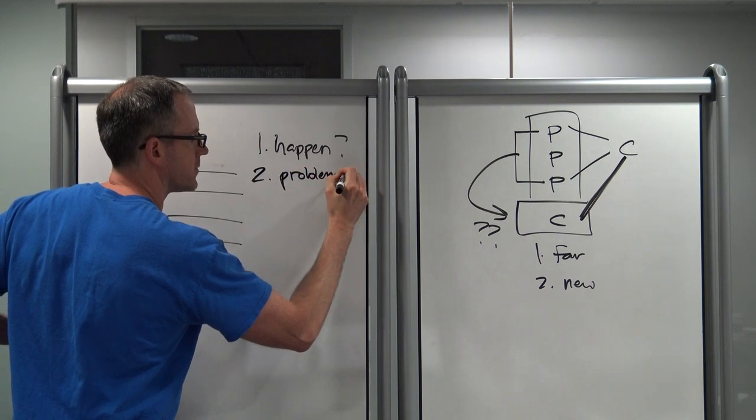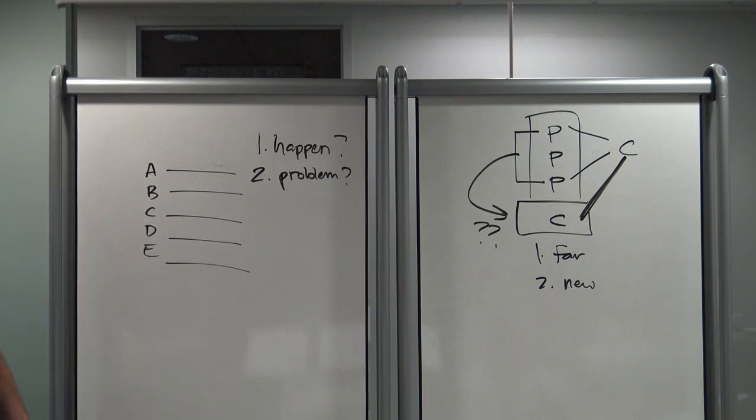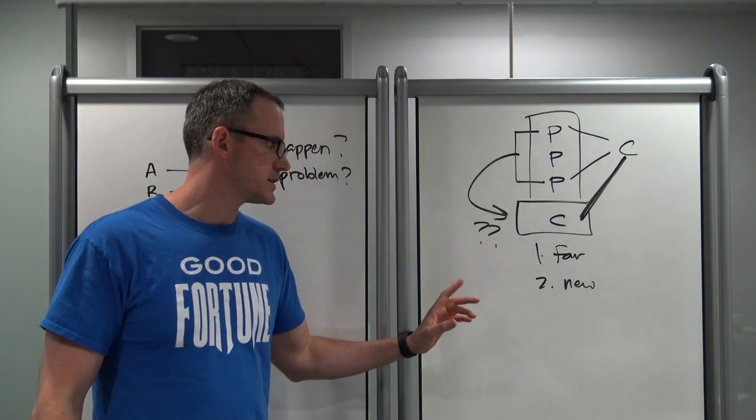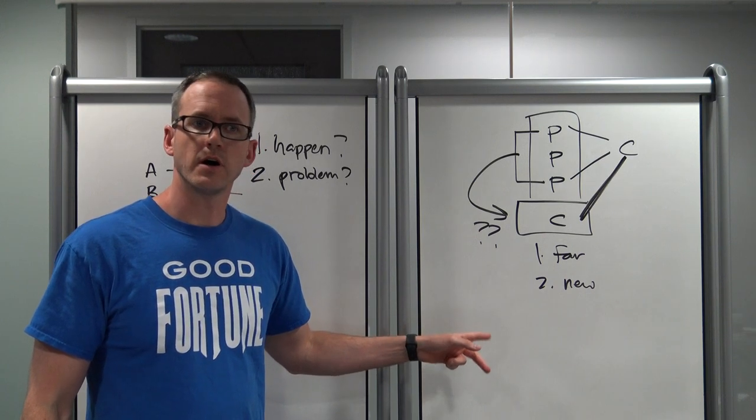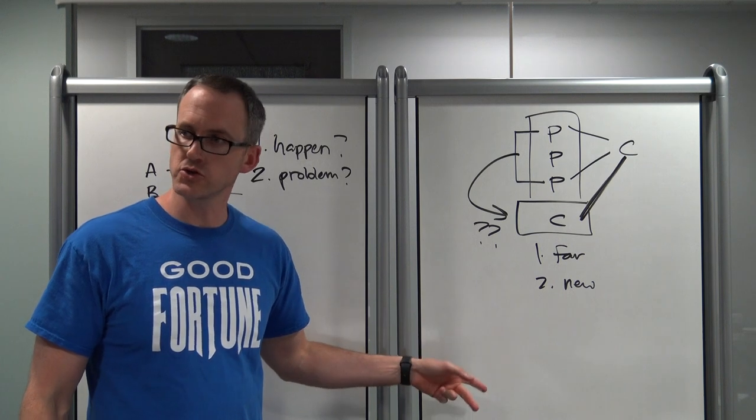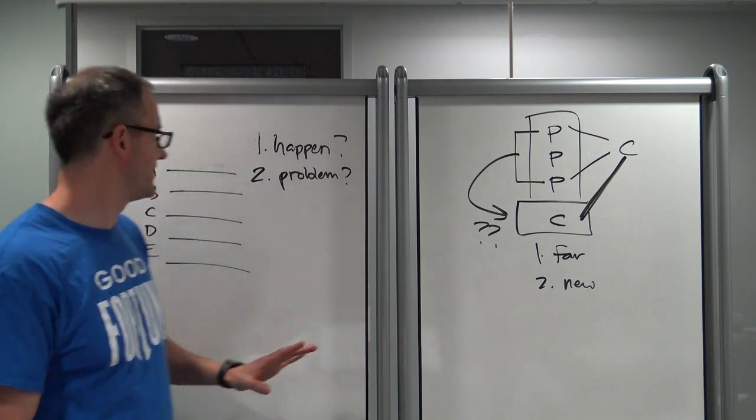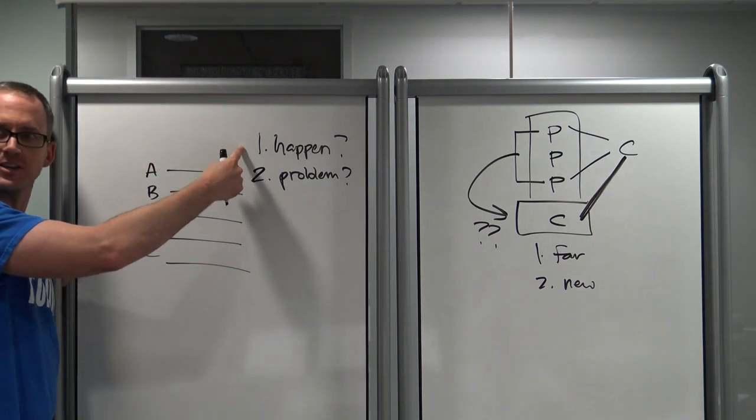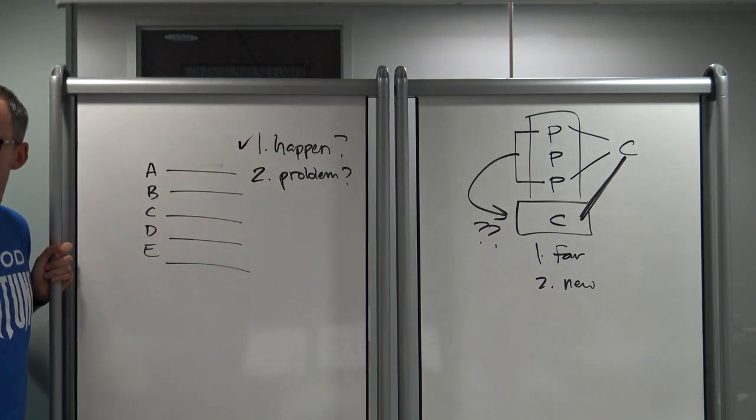The second question you want to ask yourself is, is this a problem? Because some answer choices will be describing what happened, but they are not a problem. The example I always give is an example from a test that I took officially, in which one of the answer choices said, the argument is vulnerable to criticism, on the grounds that it draws a conclusion on the basis of evidence. I was like, okay, hold up. Did it draw a conclusion on the basis of evidence? Yes, it did. That happened. Is that a problem? No. That's how all arguments work.